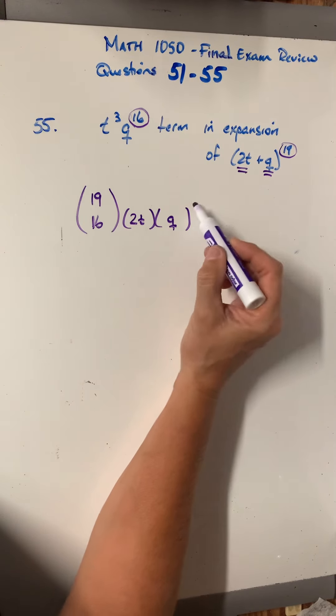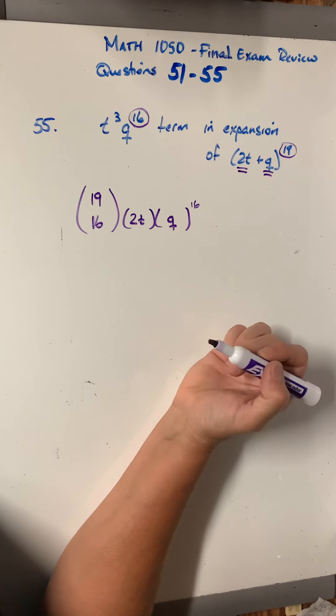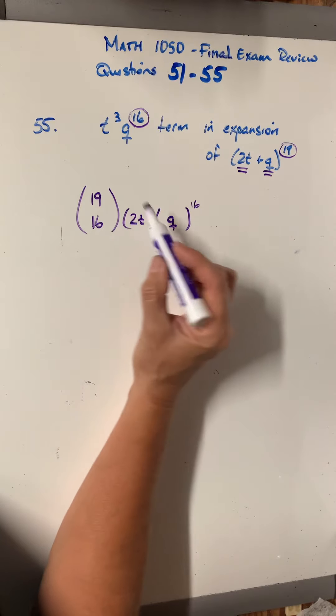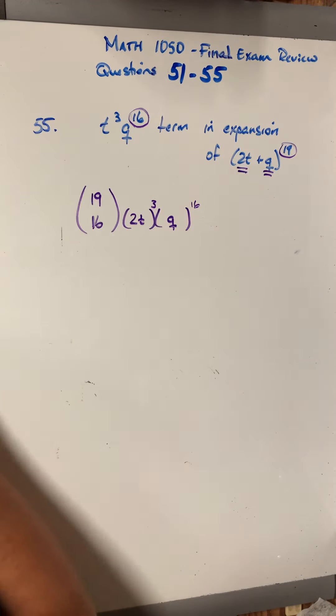Whatever this number is, is the power up here. And these two powers have to add to that one. So 16 plus 3 is 19. And that's the setup. Once you have that, then the rest is pretty easy.